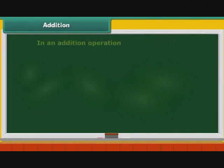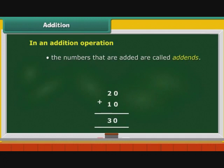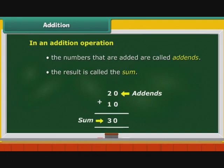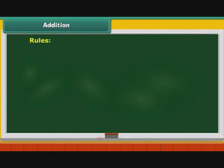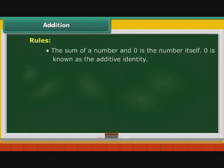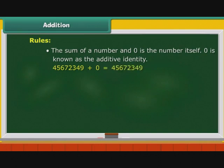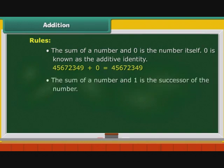In an addition operation, the numbers that are added are called addends, and the result is called the sum. Before we begin, let us understand some rules of addition. The sum of a number and 0 is the number itself. 0 is known as the additive identity. For example, 45672349 plus 0 is equal to 45672349.